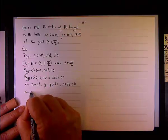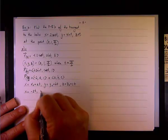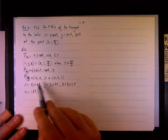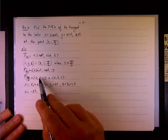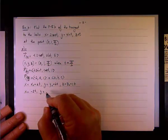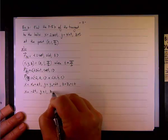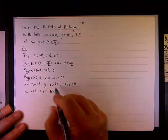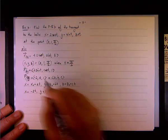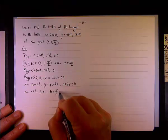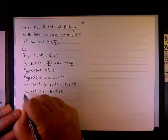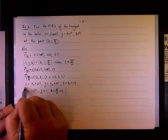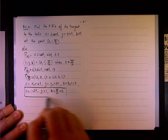And in this case, x sub 0 is 0 and a is negative 2, so simply going to have x equals negative 2t. y equals, y sub 0 is 1 but b is 0, so y equals 1. And z sub 0 is π over 2 and c is 1, so π over 2 plus t.